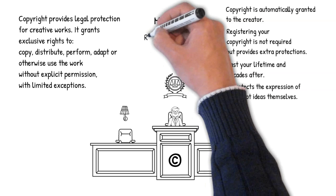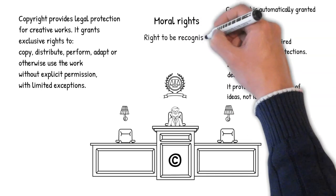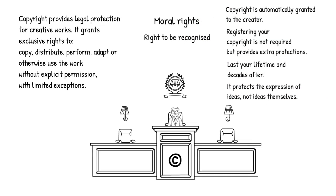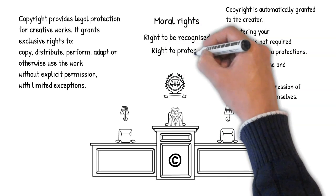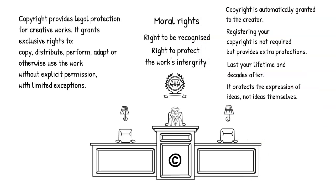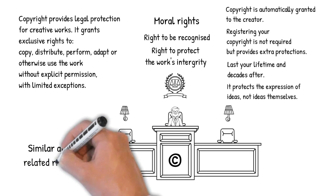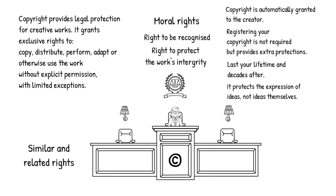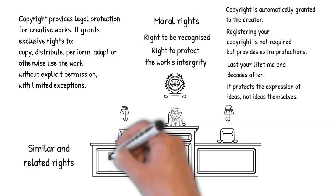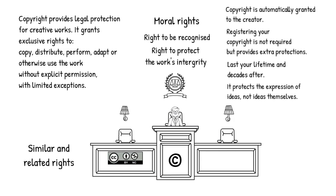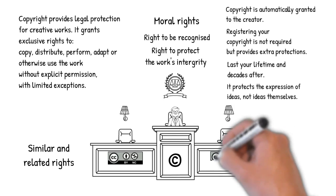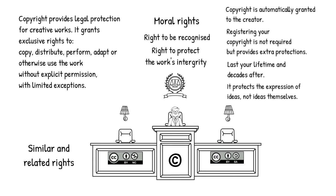Two examples of moral rights are: the right to be recognized — this is the duty of attribution to the originator of the work regardless of whom the copyright holder is — and the right to protect the work's integrity, which allows the author to object to distortions or mutilations of the work that prejudice the author's honor or reputation. There are also similar and related rights, which grant additional exclusive rights to those who perform in or broadcast a work to the public. Creative Commons licenses and legal tools account for moral rights and similar and related rights, meaning those who use Creative Commons licenses give permission to the public to use their works in ways that might otherwise violate those terms.